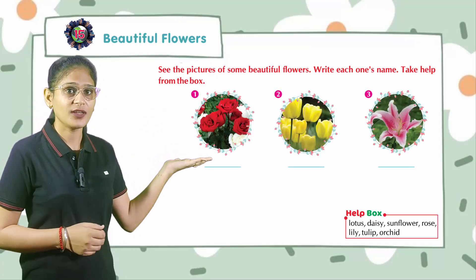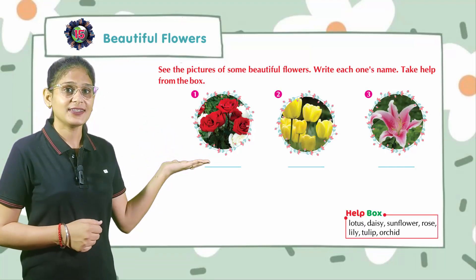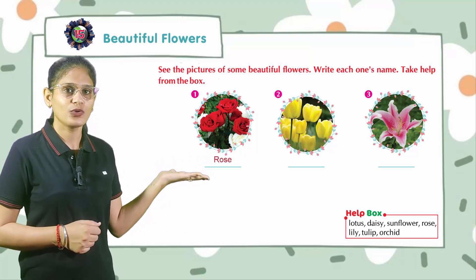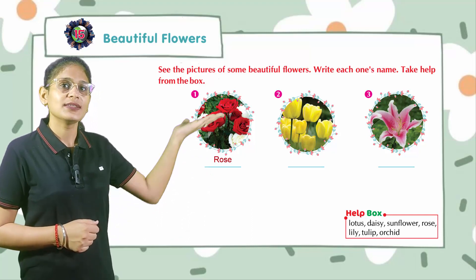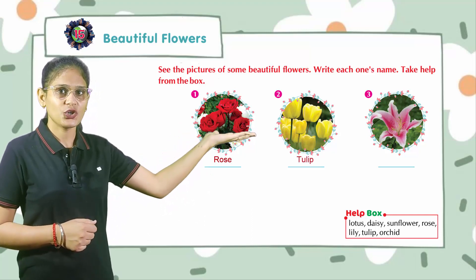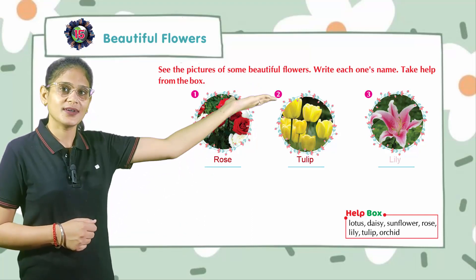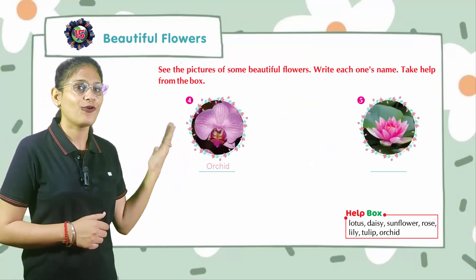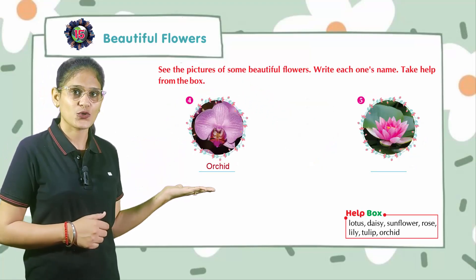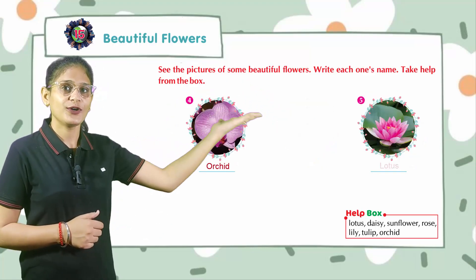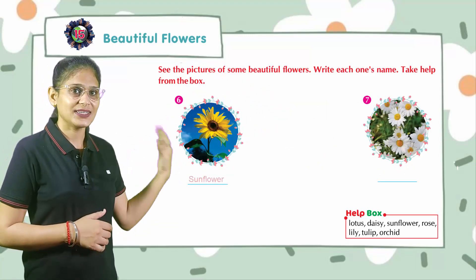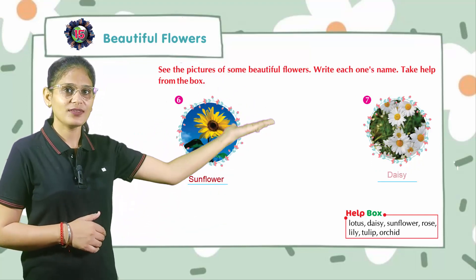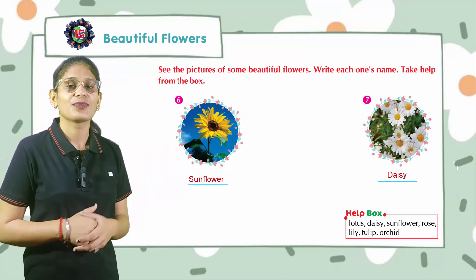Look at the first picture. That is rose. So write down rose here. Second, tulip. Third, lily. Fourth, orchid. Fifth, lotus. Sixth, sunflower. Seventh, daisy.